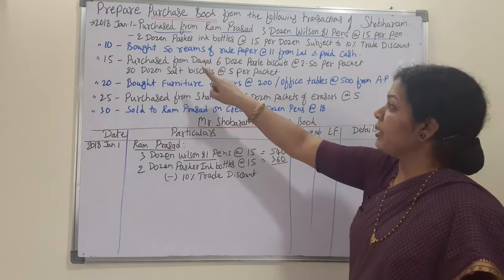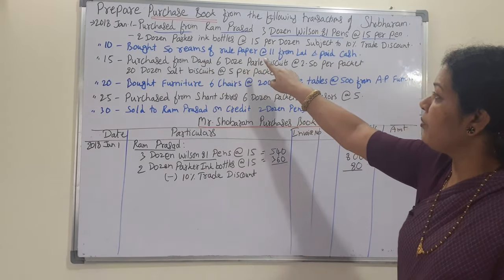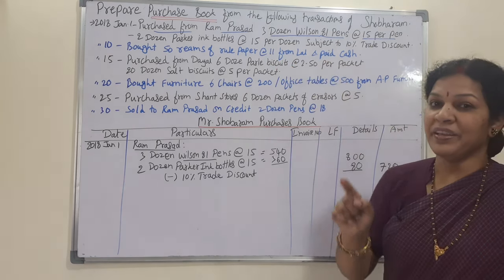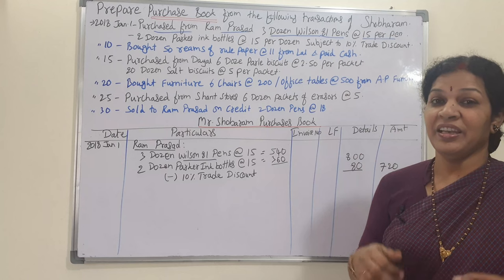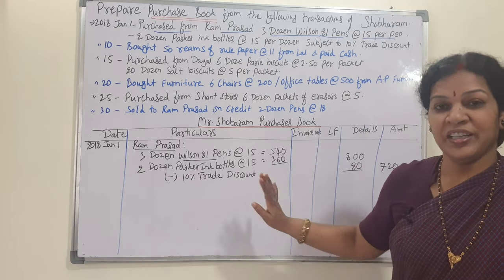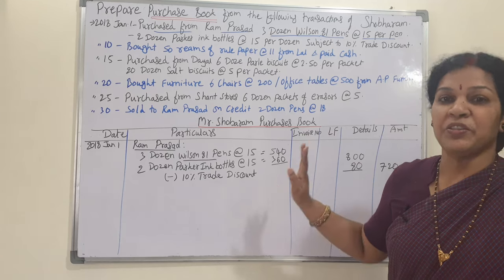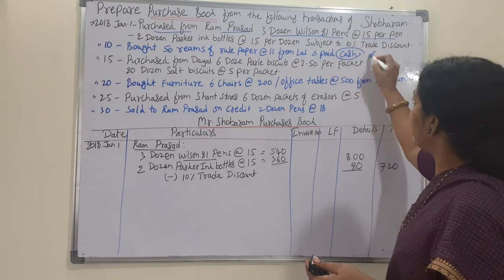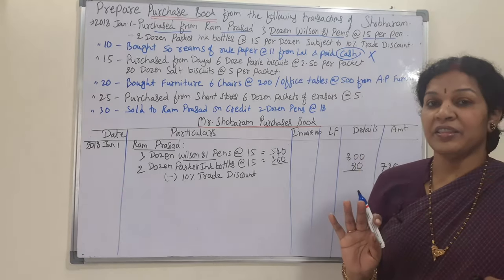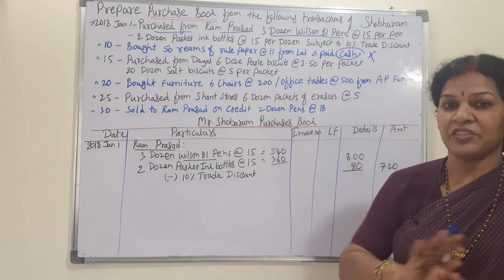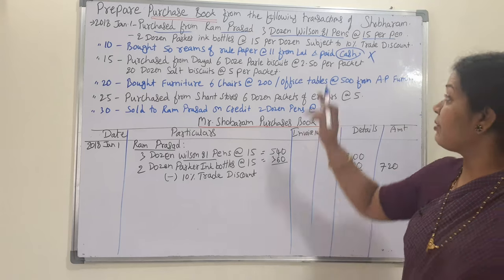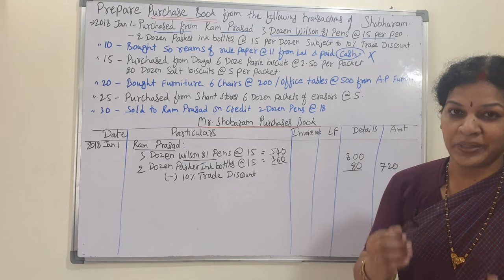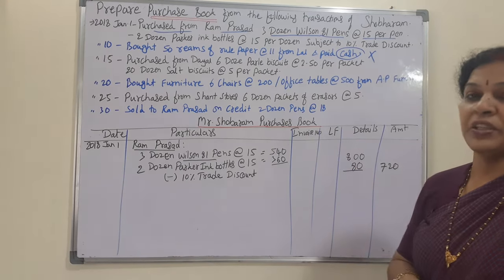On the 10th: bought 50 reams of ruled paper at the rate of 11 rupees from Lal and paid cash. Since cash is paid, this does not come in the purchase book — we do not take cash transactions. So we ignore the 10th day transaction.